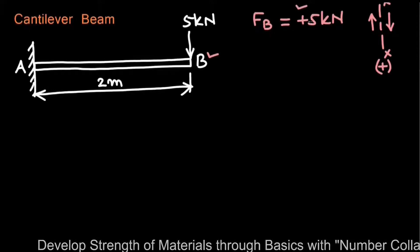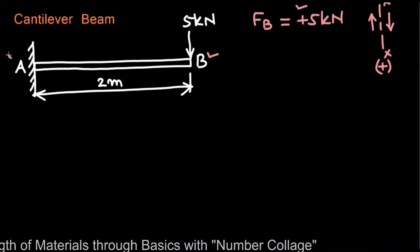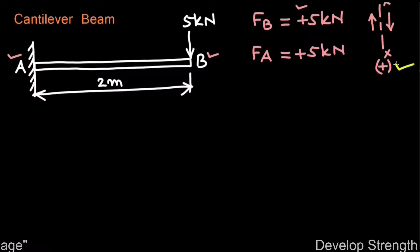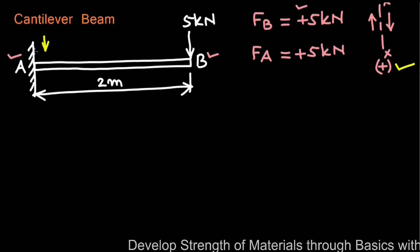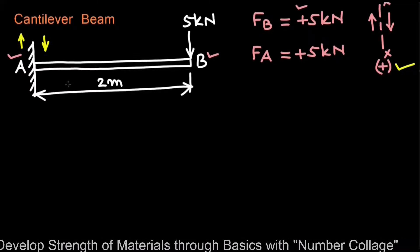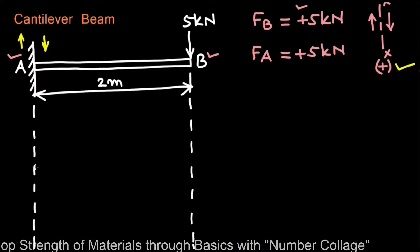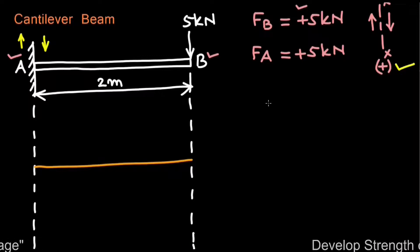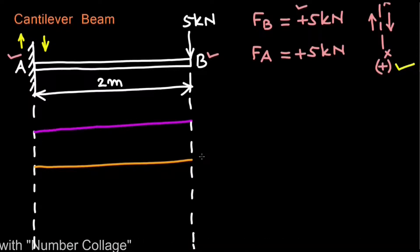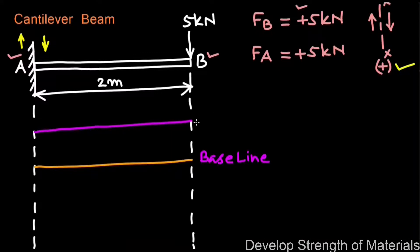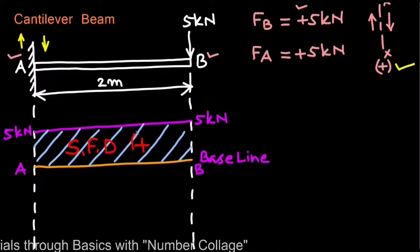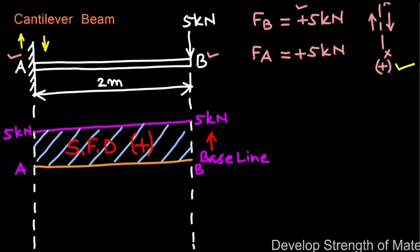The shear force at point A, FA, will also be +5 kN by the same sign convention — there is a downward vertical load to the right and upward vertical load to the left of point A. Since there is no load between A and B, the shear force diagram is a horizontal line parallel to the baseline at a height of 5 kN, plotted above the baseline as it is positive.